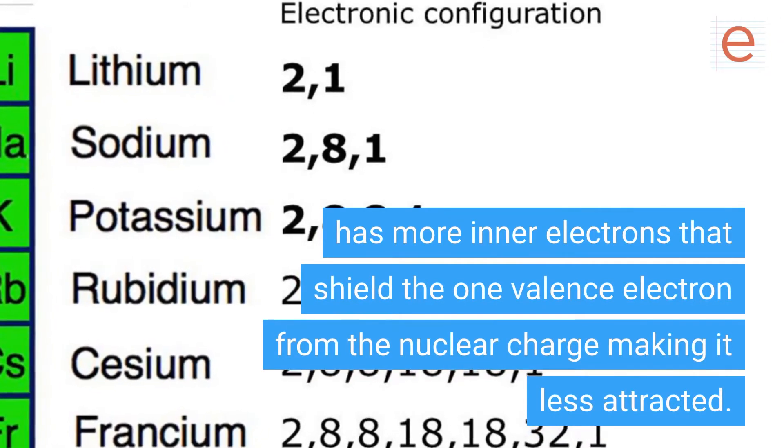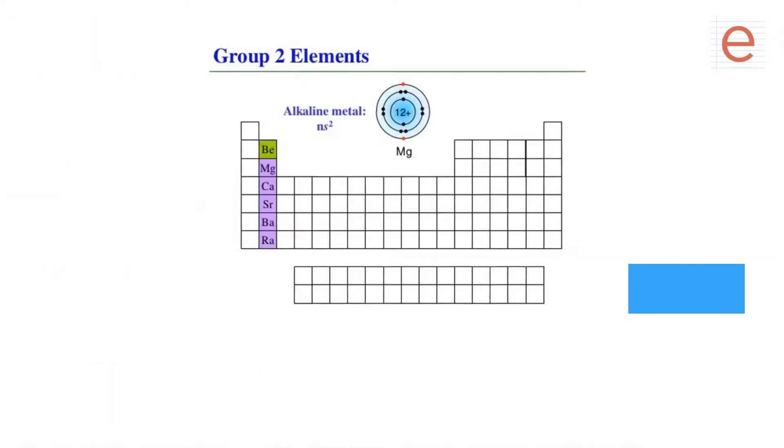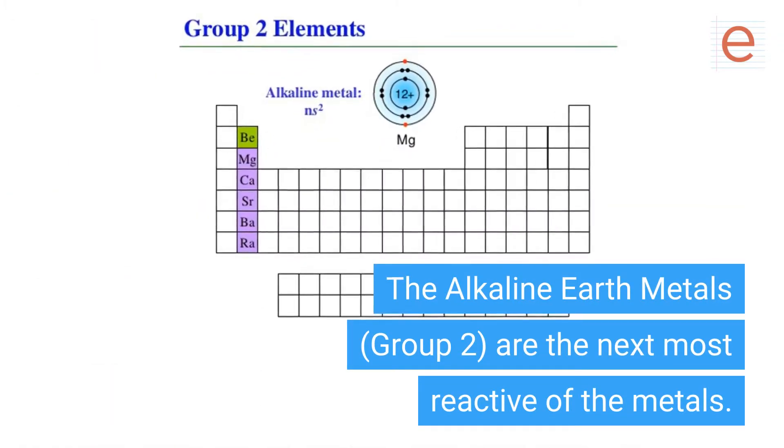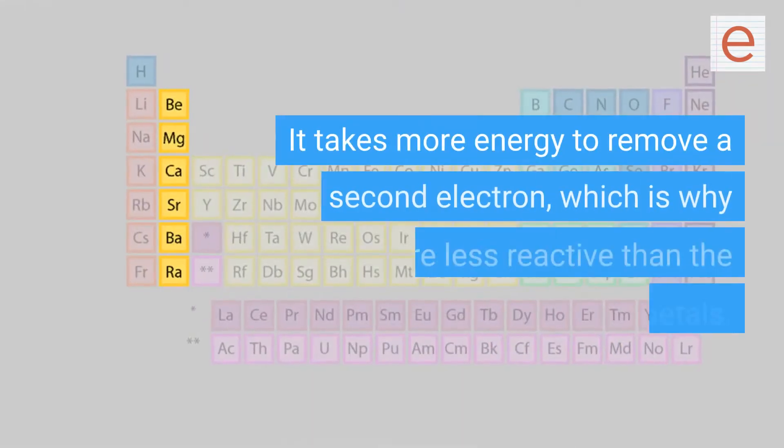The alkaline earth metals, group 2, are the next most reactive of the metals. They achieve stability by losing two electrons. It takes more energy to remove a second electron, which is why they're less reactive than the group 1 metals.